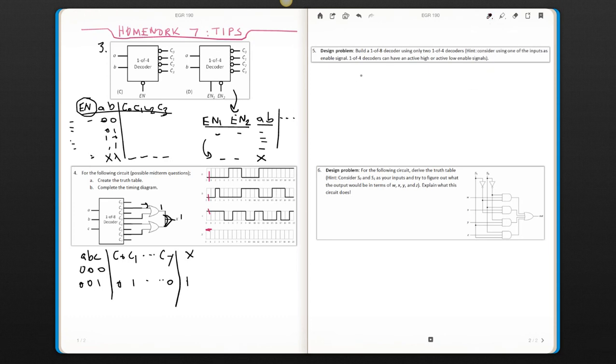This question is asking, same as like a 4, like 1 of 8 decoder. So for a 1 of 8 decoder, you have 3 inputs, A, B, and C, and 8 outputs.